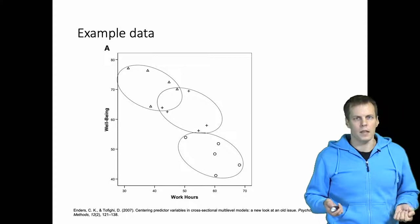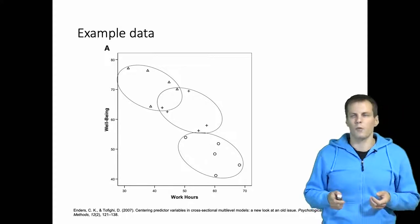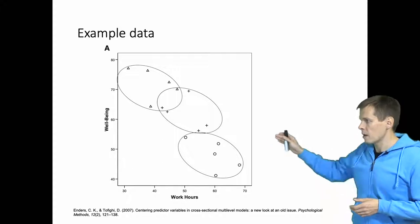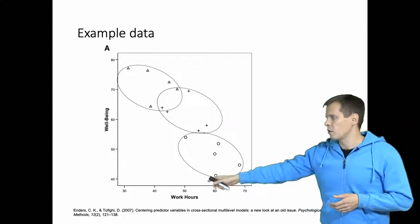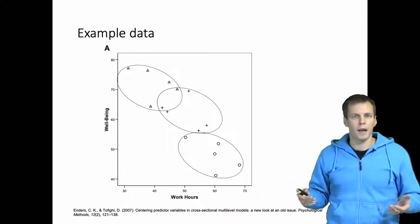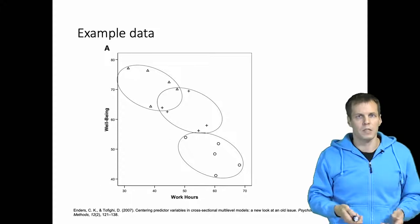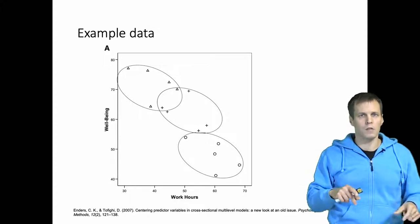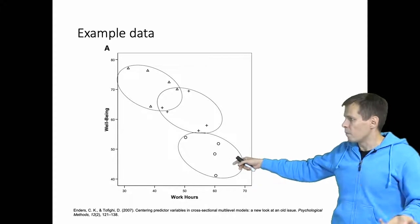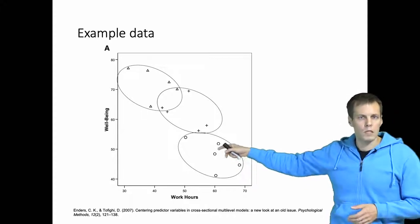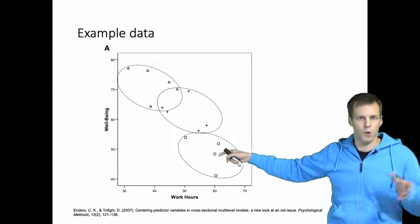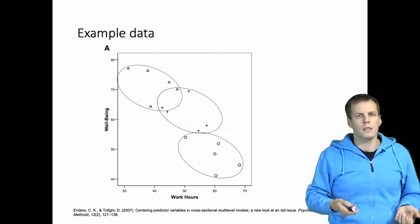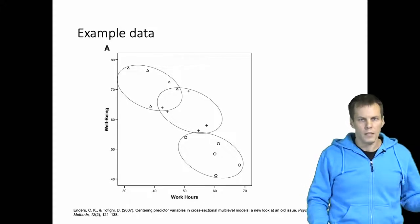Let's take a look at what centering does, using the paper by Enders and Tofigi. They present an example with three clusters or three individuals where the dependent variable is well-being on the y-axis and the independent variable is work hours on the x-axis. Each individual is measured five times. There's a negative between-cluster correlation — when a person works more they have lower well-being — and also a negative within-cluster correlation.